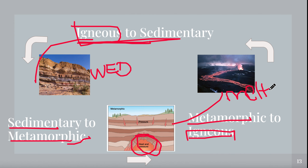To summarize the arrow rules: all arrows pointing to sedimentary rock involve weathering, erosion, and deposition. All arrows pointing to metamorphic rock involve heat and pressure — whether the starting rock is igneous or sedimentary. All arrows pointing to igneous rock involve melting — whether starting from sedimentary or metamorphic rock. So: to sedimentary = WED; to metamorphic = heat and pressure; to igneous = melting.